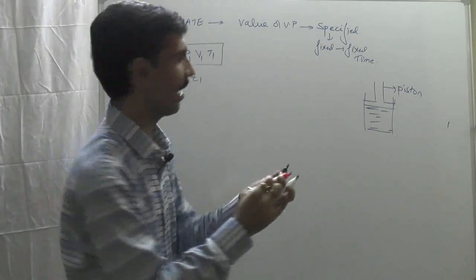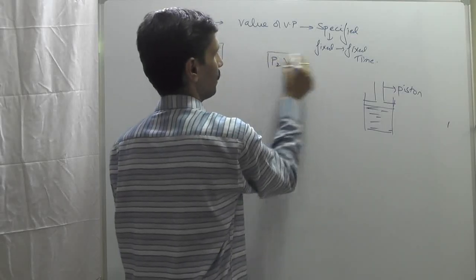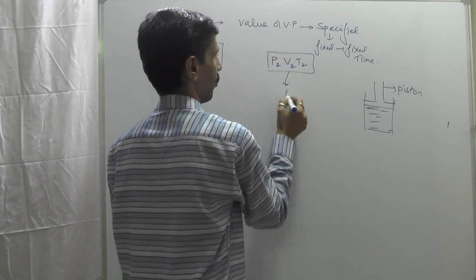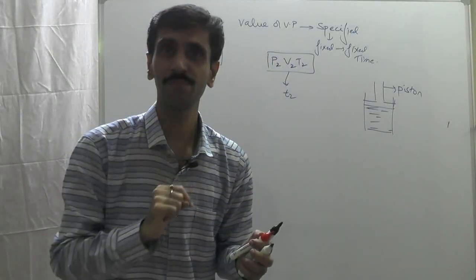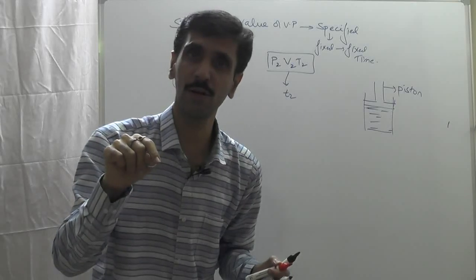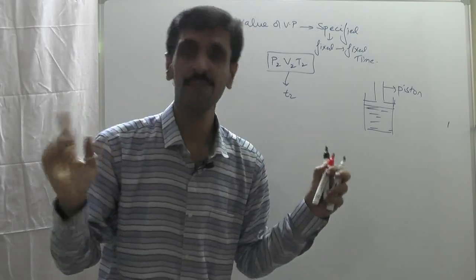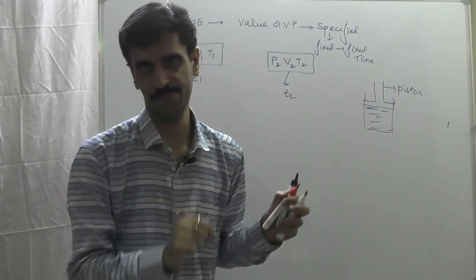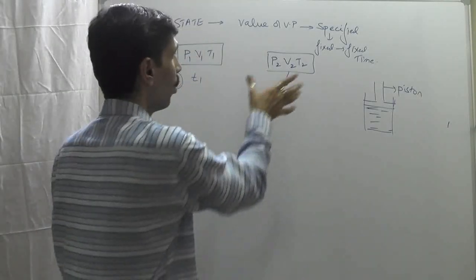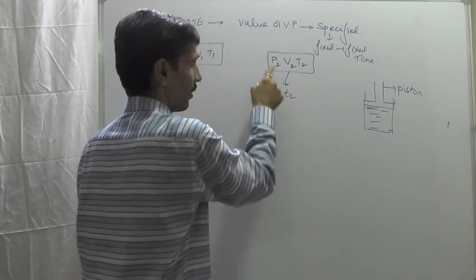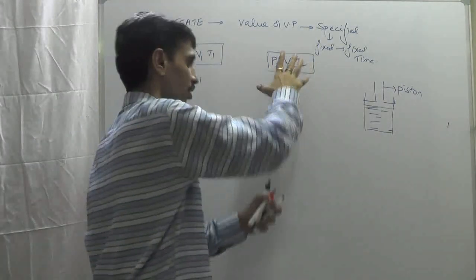Now I go for another case and write down P2, V2, and T2. Note: capital T is temperature, and in this chapter we consider temperature in Kelvin. Small t is time. At a fixed time, the pressure, volume, and temperature values are fixed and defined — and therefore this is also a state, which I mark as state 2 at time t2.